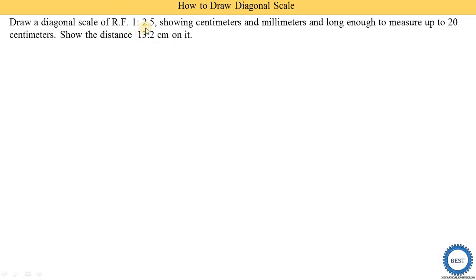Draw a diagonal scale of representative fraction 1 upon 2.5. The representative fraction equals 1/25, where 1 indicates the length on the drawing and 2.5 indicates the actual length of the object. The scale shows centimeters and millimeters and is long enough to measure up to 20 centimeters — meaning the maximum distance is 20 centimeters.